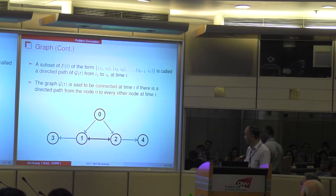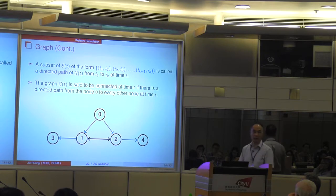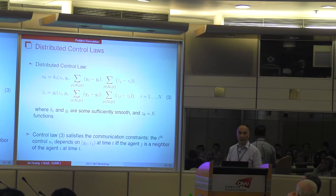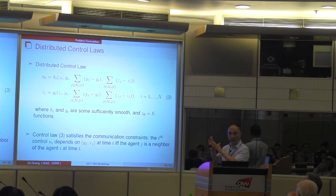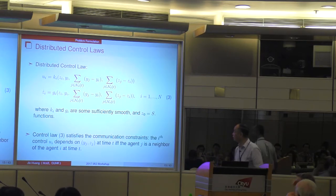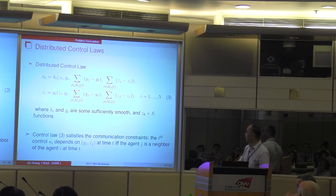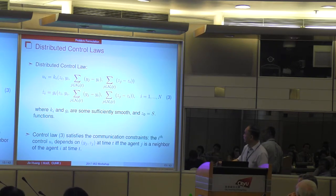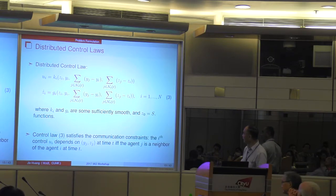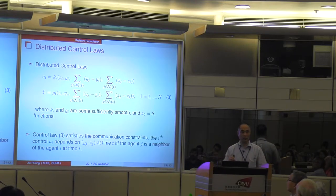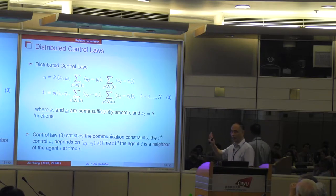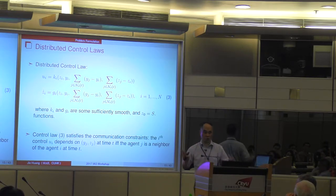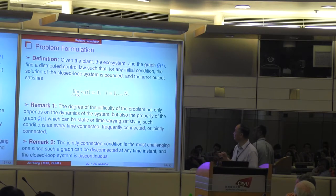This graph figure shows a connected graph because from node 0 we have a direct path to every other node. Having defined the graph, we can further characterize our distributed control law, which is given by two equations where Gi and Ki are some sufficiently smooth functions. This control law for each i depends on Yj and Zj at time T, if and only if J is a neighbor of node I. Therefore this is a distributed control law — and it is quite general, perhaps more general than you have seen before.